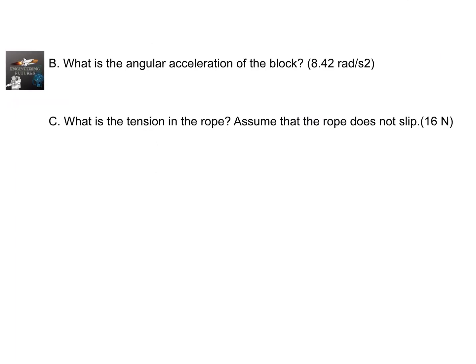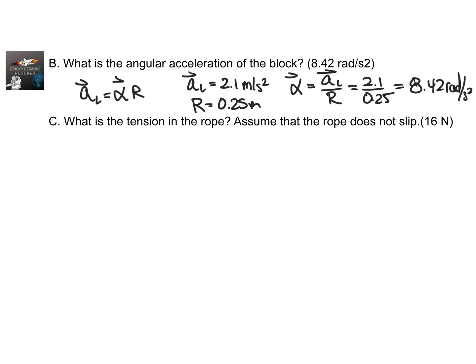Part 2 now asks what is the angular acceleration of the block? This is still a little bit simpler. If we know the linear acceleration from the previous problem, which is 2.1 meters per second squared, and we know the radius is 0.25 meters, well then angular acceleration is just linear acceleration all over r. So 2.1 divided by 0.25 gives us 8.4, and that is radians per second squared.